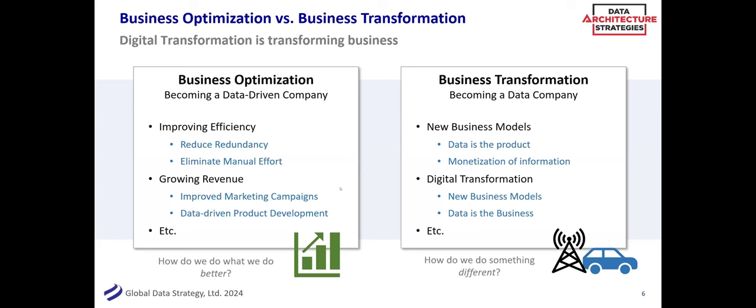We've heard a lot about data monetization and entirely new business models. Think of Uber: is Uber a taxi company, or is it a data company with some cars around it? One could argue the latter. A lot of these disruptive business models really are digital models, and digital is driven by data. So both business optimization and business transformation are valuable and important.